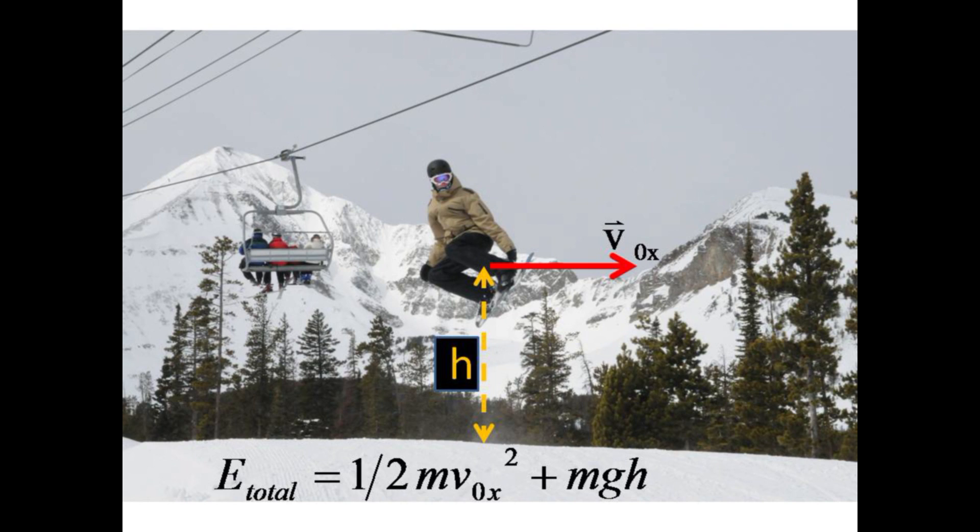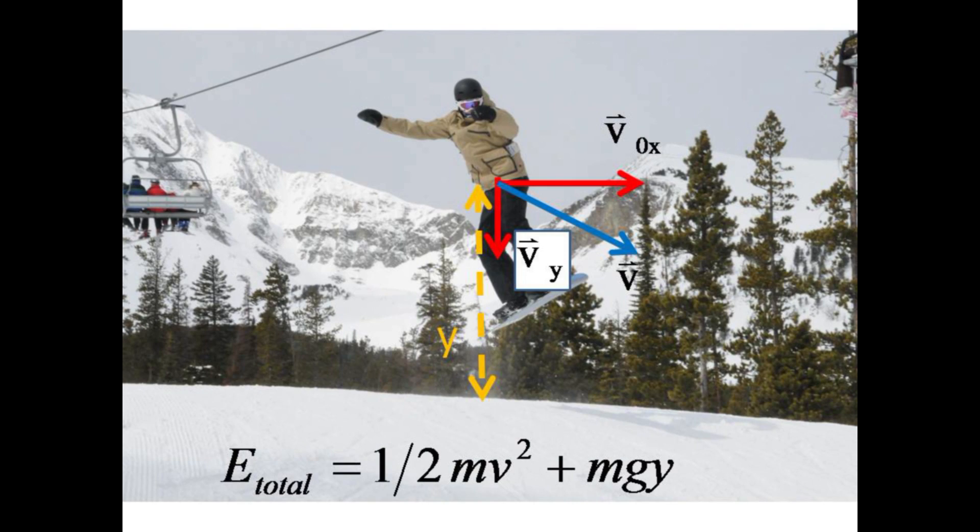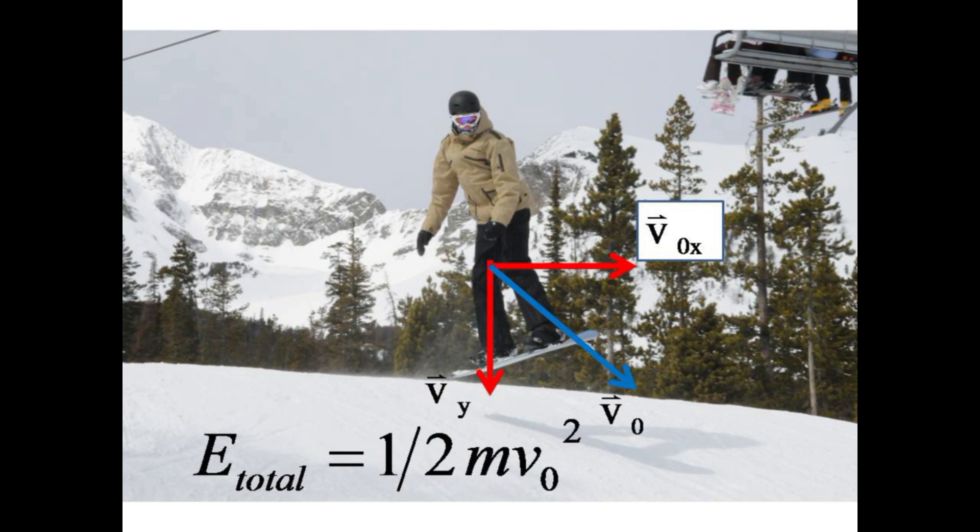At the peak of his trajectory, he maintains some kinetic energy because of his horizontal velocity, but has maximized his potential energy. During the downward descent, he trades potential energy of height for kinetic energy with more speed as the y component of velocity increases in magnitude again. Finally, as he returns to his original height, he has lost all potential energy and has recovered his kinetic energy. Throughout this flight, his total mechanical energy has remained the same.